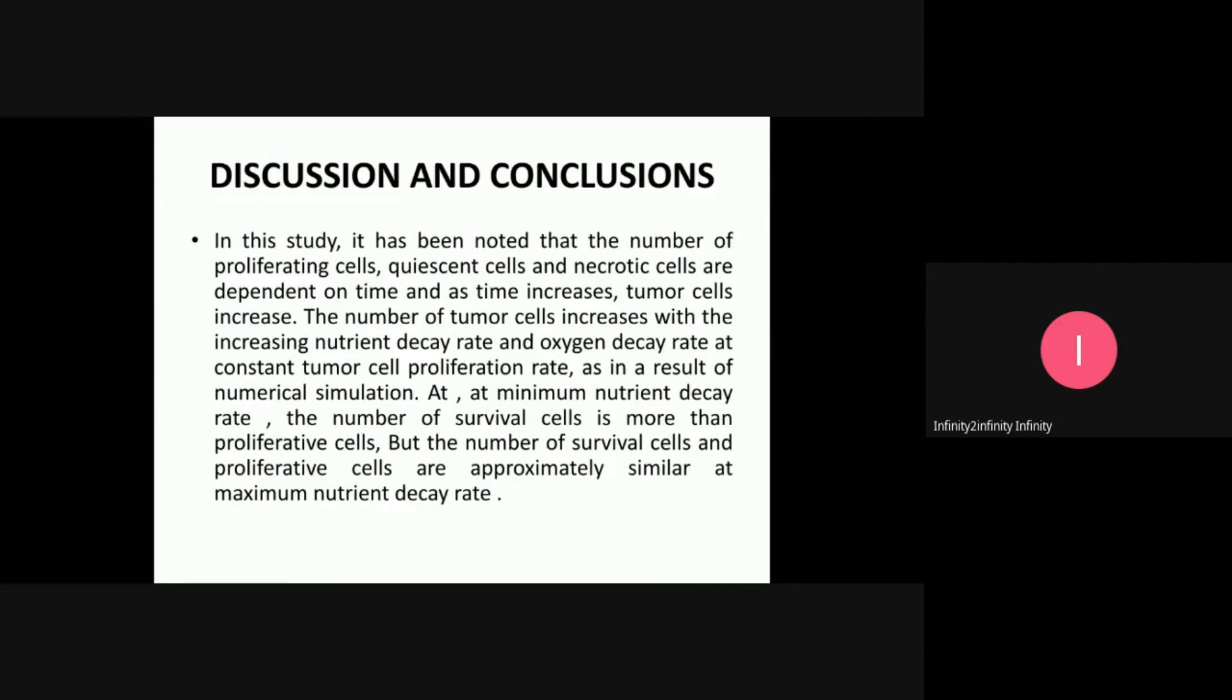This study shows that the number of proliferating cells, quiescent cells, and necrotic cells are dependent on time. As time increases, tumor cells increase. The number of tumor cells increases with increasing nutrient decay rate and oxygen decay rate at constant tumor cell proliferation rate, as shown in the numerical simulation results. At minimum nutrient decay rate, the number of tumor survival cells is more than proliferating cells, but these are approximately similar at maximum nutrient decay rate. That is the conclusion of this study.